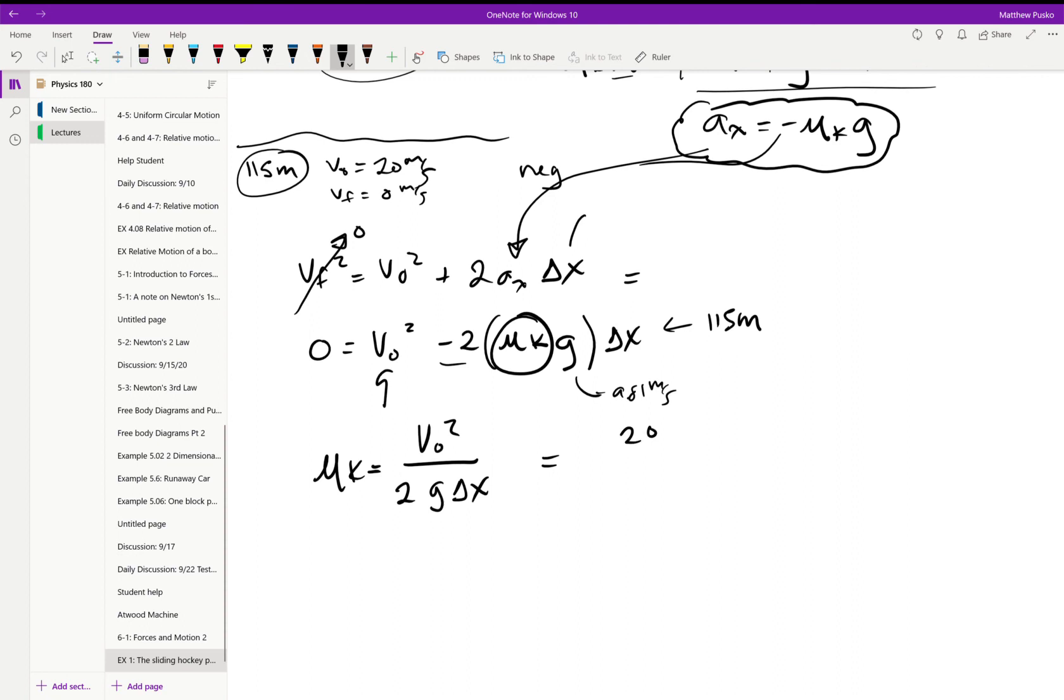And plugging in all our numbers, we'd have a 20, it's our initial velocity squared, then two times nine point eight one times 115. And yeah, remember this is a positive in this equation. Generally we get the sign from our force.